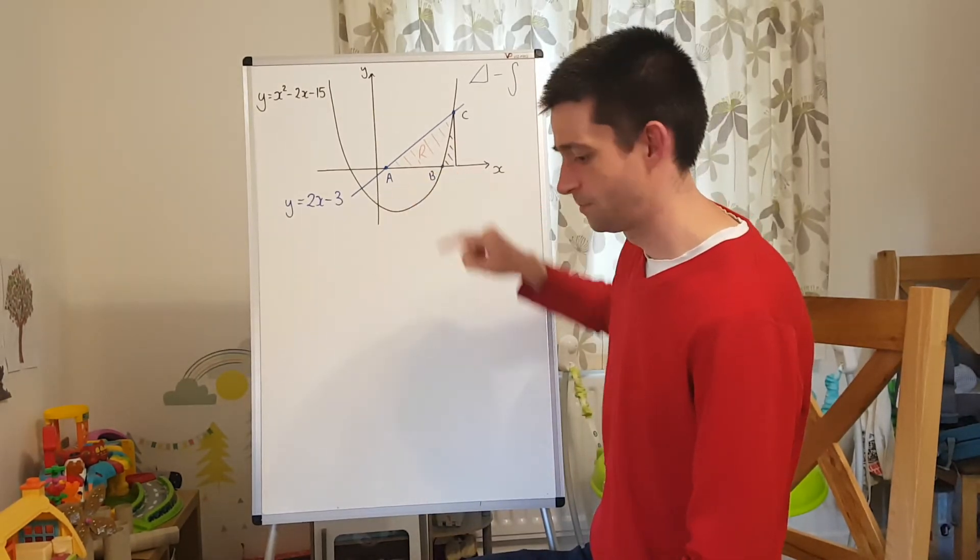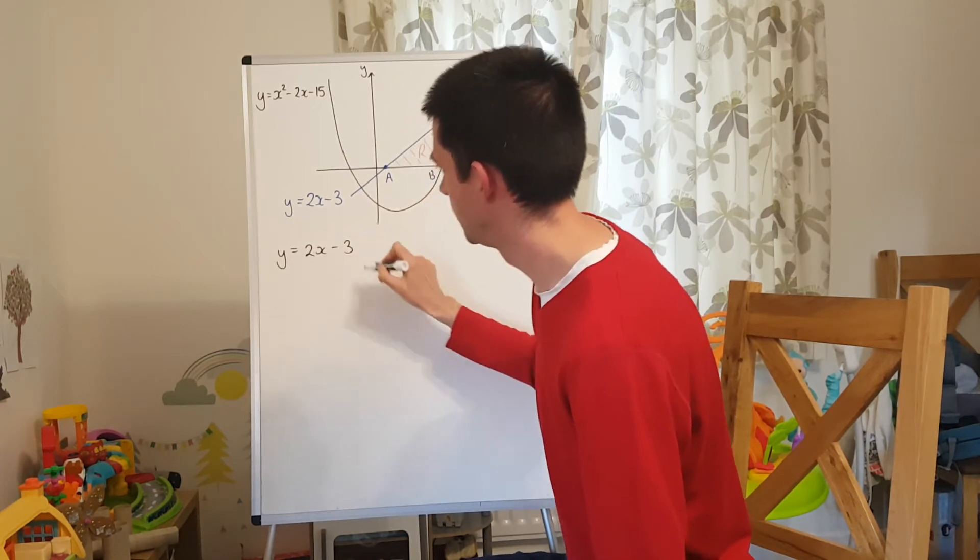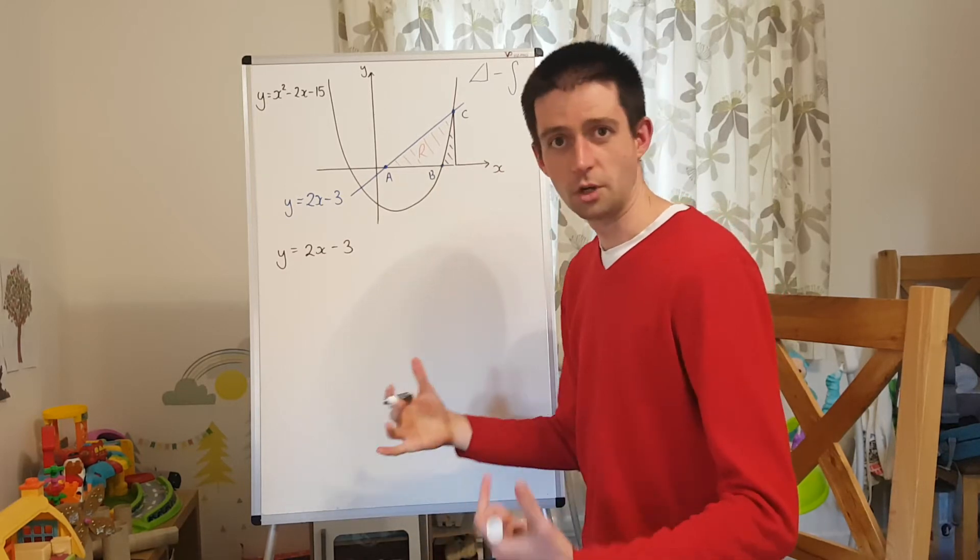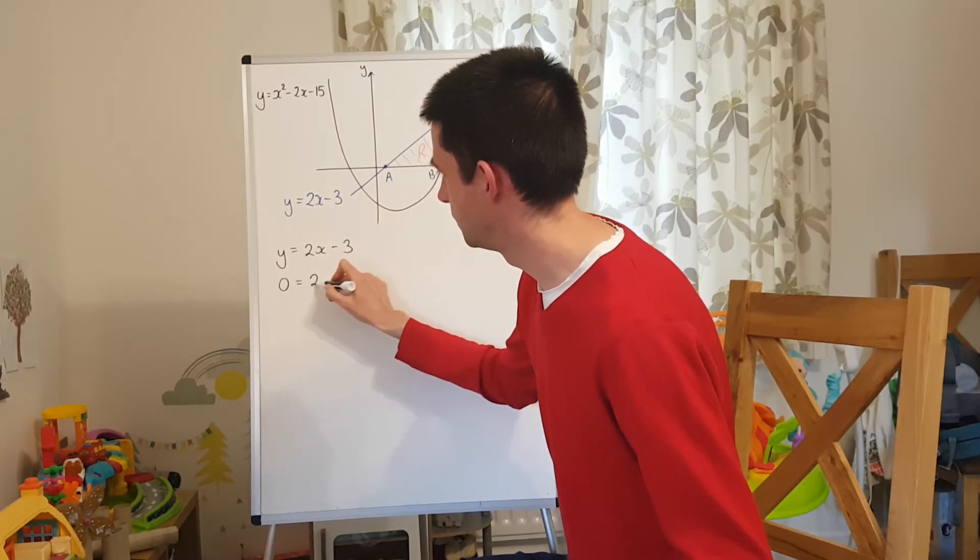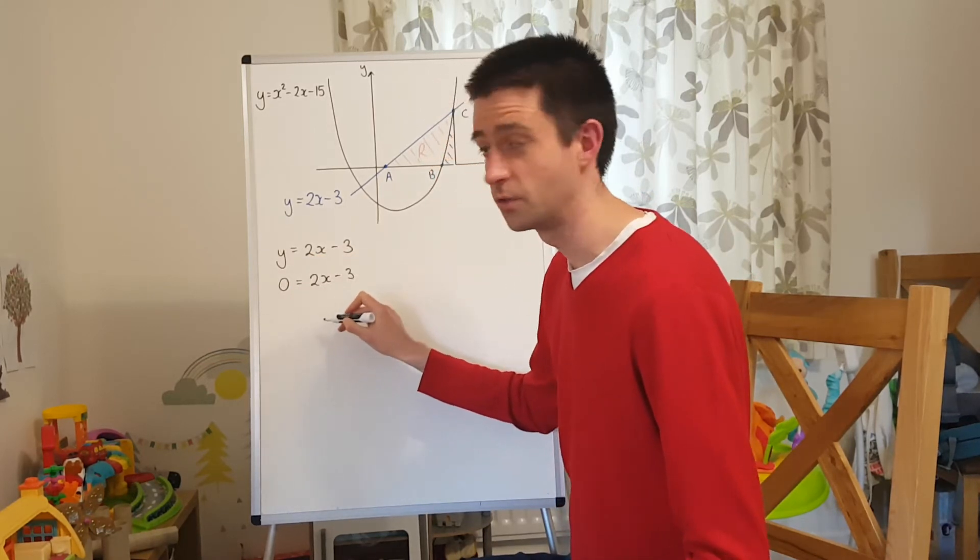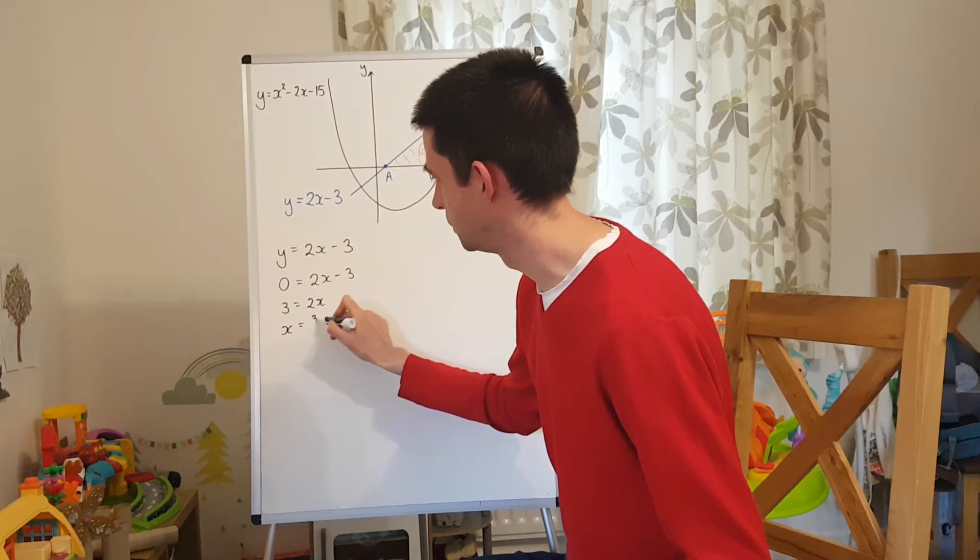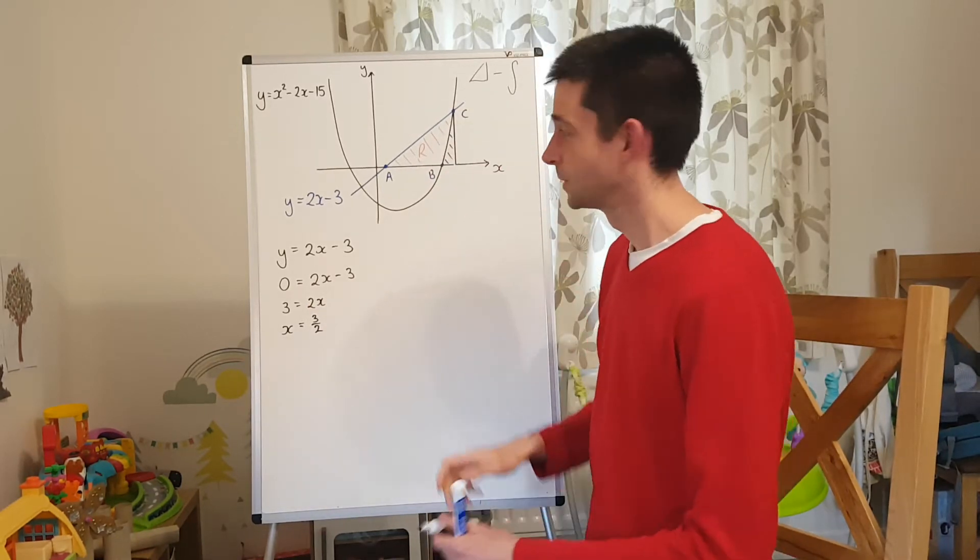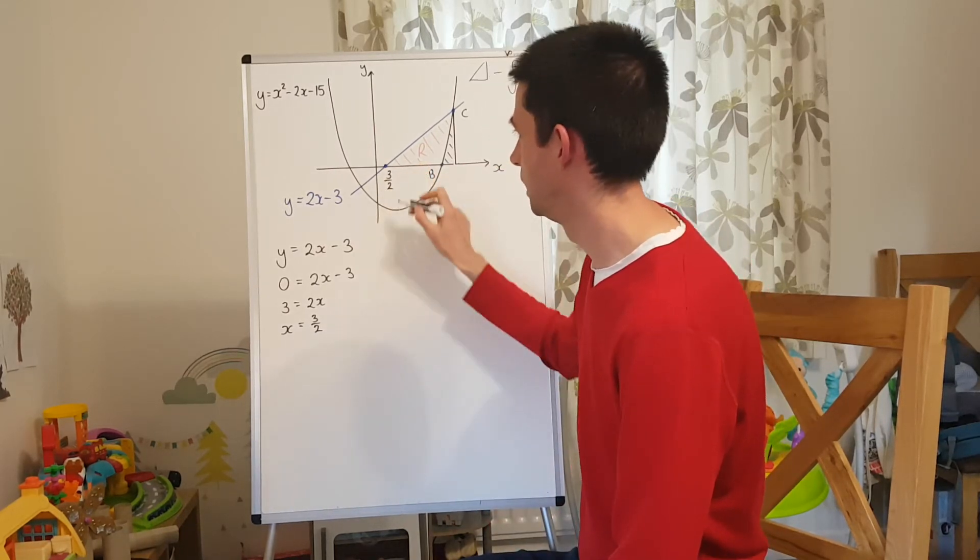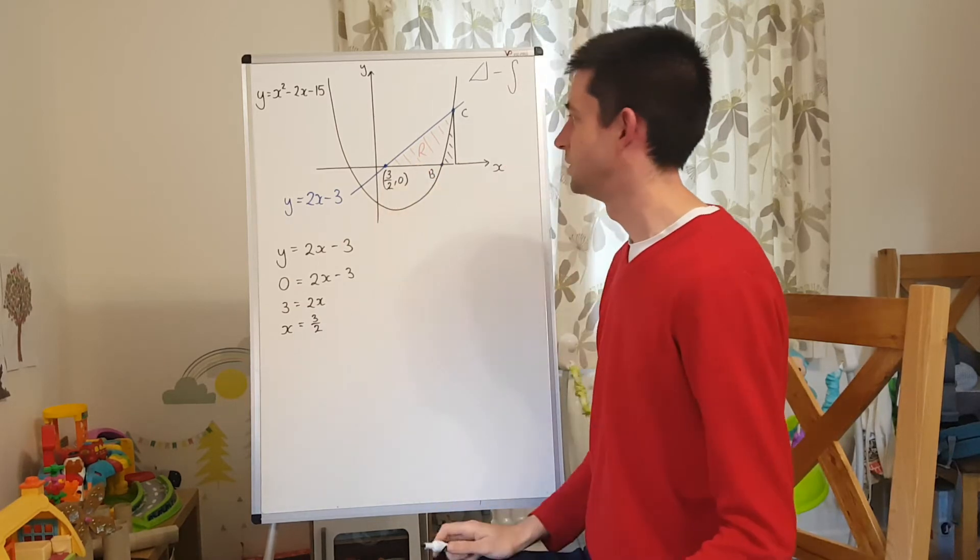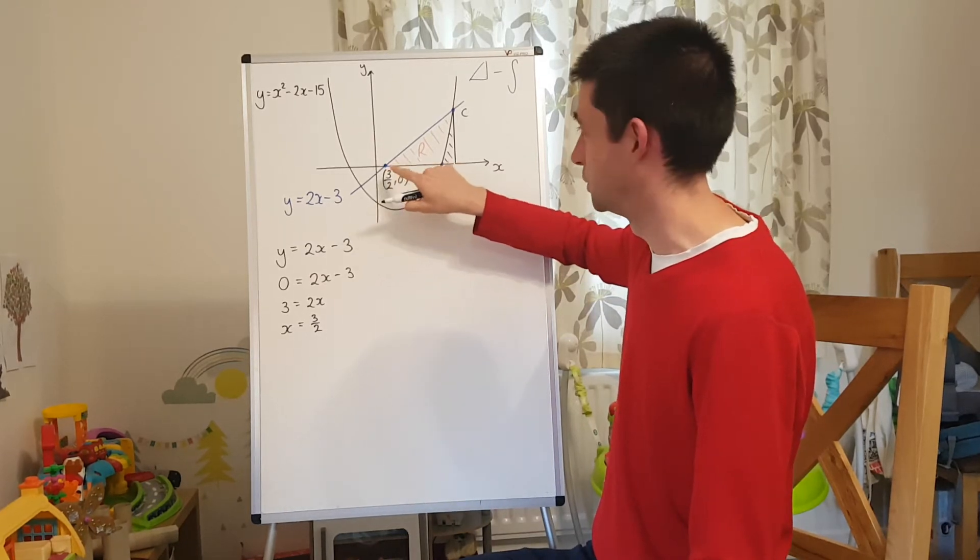First of all, finding this coordinate A, this is the point where the equation y equals 2x minus 3 meets the x-axis. So how do we find an x-intercept? We make y equals 0. So if I make y equals 0, then 0 equals 2x minus 3, which means that 3 would be equal to 2x, so x would be equal to 3 over 2. So what I can now do is I can label that coordinate on there as 3 over 2, 0. So I've found that point A.